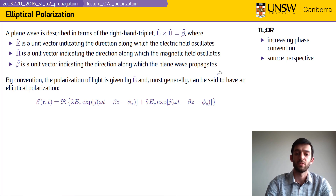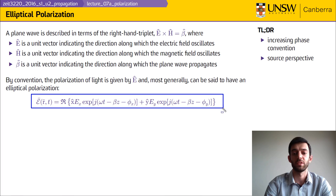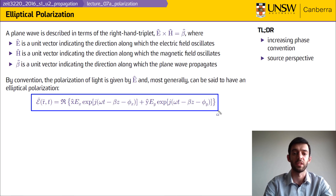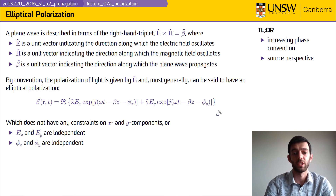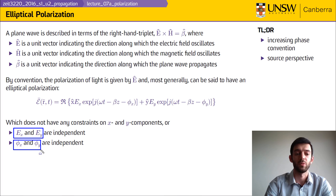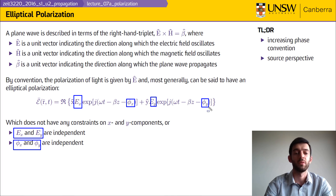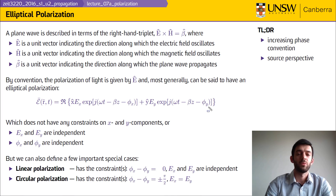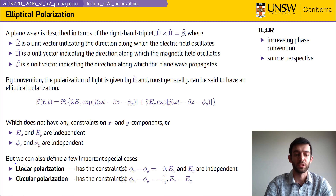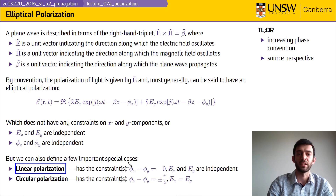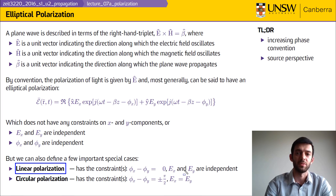In the most general case we can say that it has elliptical polarization. In terms of the increasing phase convention, there are no constraints on the x and y components — that means Ex and Ey are independent, and so are φx and φy. However, we can also make a few distinctions for special cases. There is linear polarization, which means that φx − φy has to be zero; in other words Ex and Ey have to be in phase, but their magnitudes are independent.